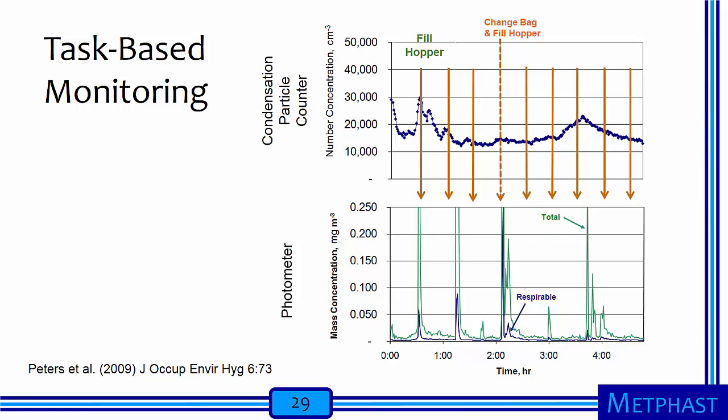Each time the hopper was filled or the bag was changed, we see a bump in respirable and total mass concentrations. These data helped us define what types of measurements are important to collect in this facility. The engineered nanomaterial was not associated with ultrafine particles; instead, it was associated with particles in the larger size fractions, which are dominated by mass concentration.